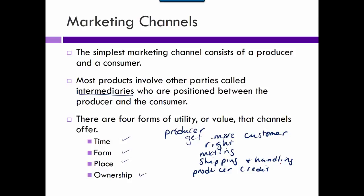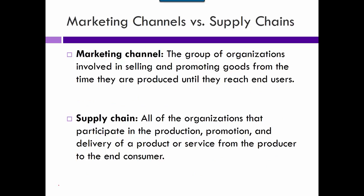It would be cheaper for a producer to go straight to the consumer, but because intermediaries perform all these services, that's why producers are willing to take a little less profit — because a lot of times it means they'll get more sales or be able to save costs elsewhere.